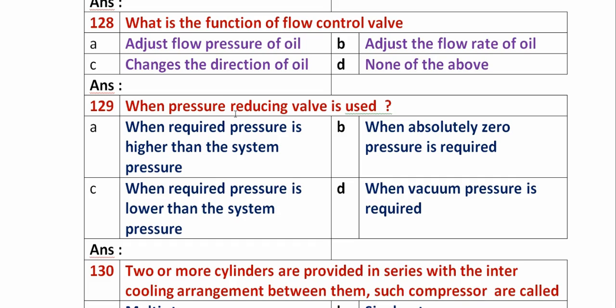Question 128: What is the function of a flow control valve? Option A: to adjust flow pressure of oil. Option B: to adjust the flow rate of oil. Option C: changes the direction of oil. Option D: none of the above. The main function of a flow control valve is to adjust the flow rate of oil. Adjusting pressure is done by a pressure control valve, and changing direction is done by a direction control valve. So option B is the right answer.